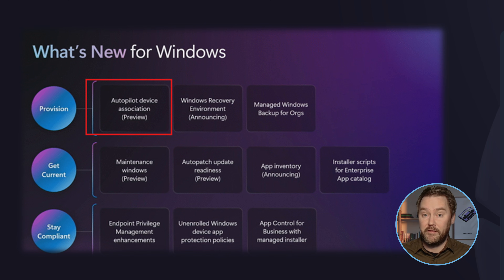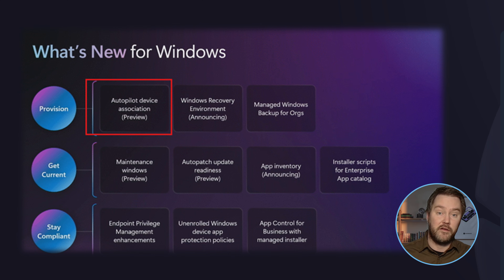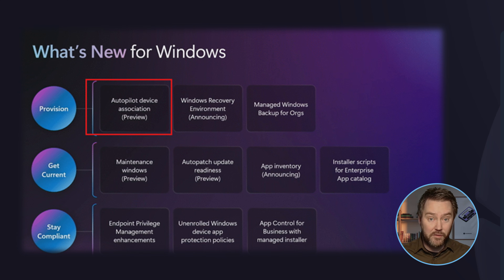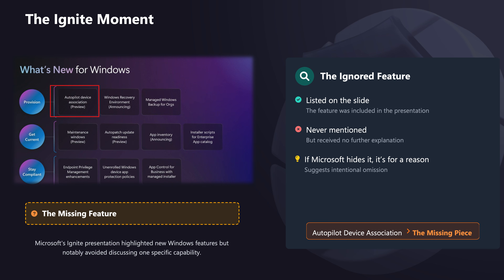That slide contains three big key investments: provision, get current, and stay compliant. The speaker walked through almost everything — Windows Recovery, Microsoft Windows Backup, maintenance windows, app inventory, and installer scripts — covering nearly everything on the slide except one feature. That feature, autopilot device association, wasn't even mentioned. It was sitting there right in the provisioning row and somehow was completely ignored. That was the moment I paused the video and stared at its name: autopilot device association.